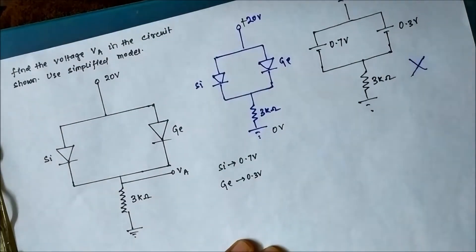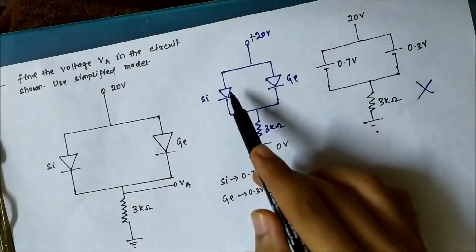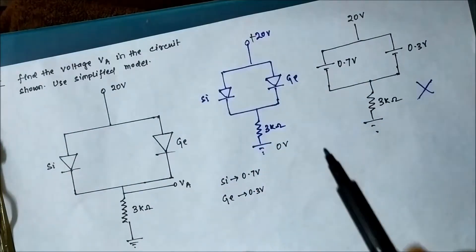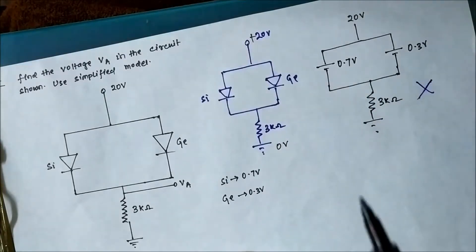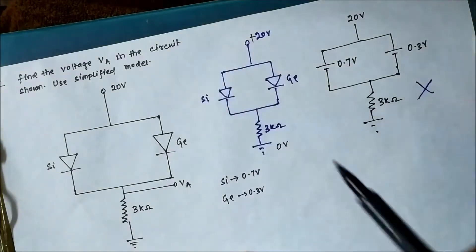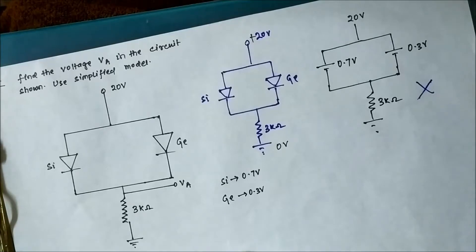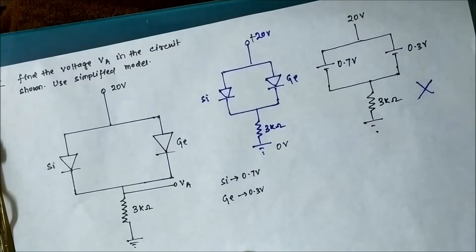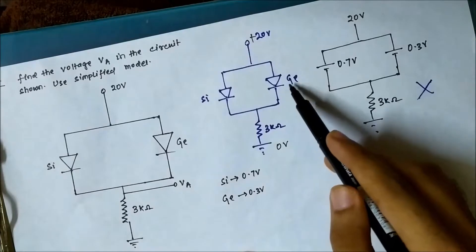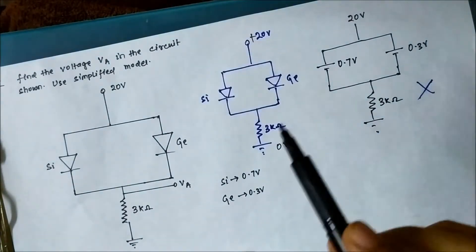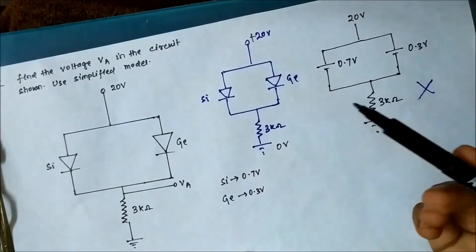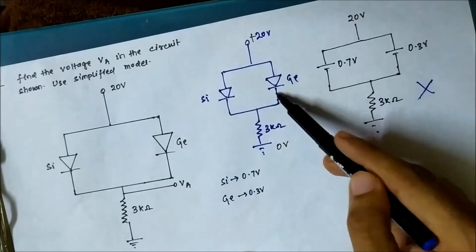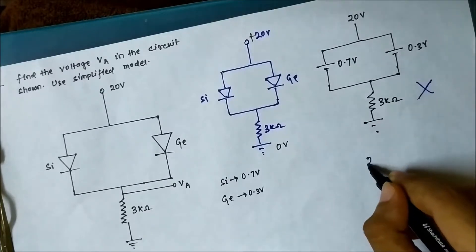Whenever you have two different diodes with different cut-in voltages connected in parallel, the one with the lower cut-in voltage gets turned on, and the one with the higher cut-in voltage remains open-circuited — it does not get a chance to turn on. In this case, germanium has a cut-in voltage of 0.3 volt, so it gets turned on first, not giving silicon a chance to conduct. So the correct equivalent circuit has only germanium on and silicon off.